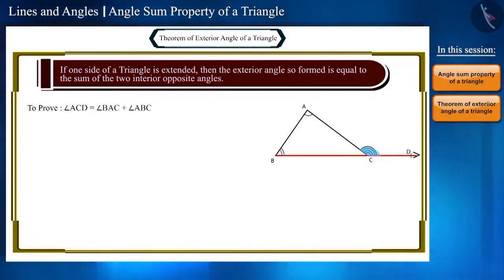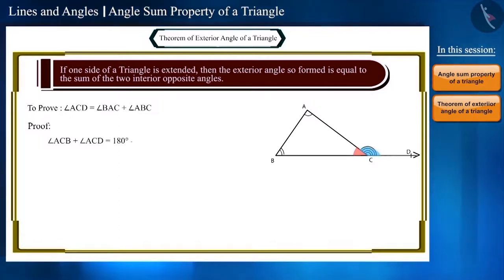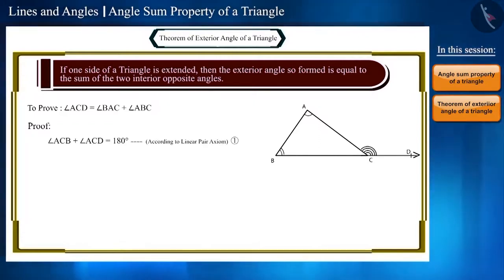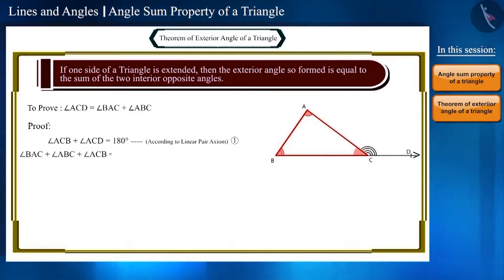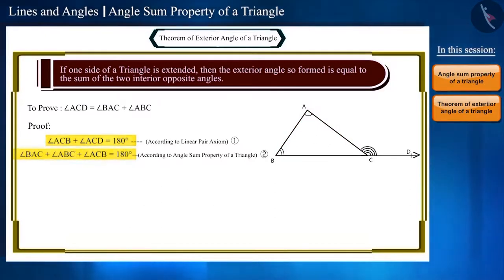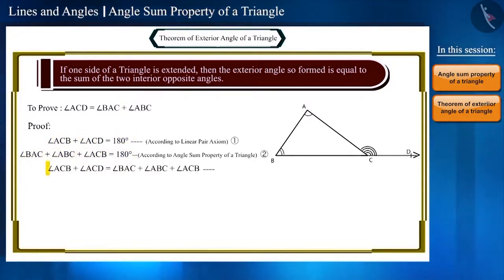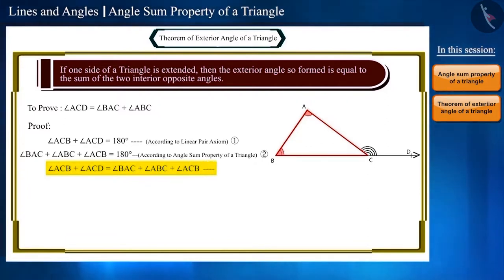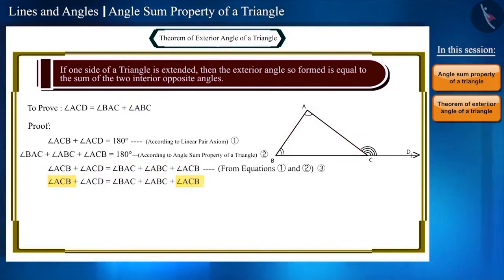This is quite straightforward. Since BCD is a straight line, angle ACB and angle ACD are a linear pair, meaning angle ACB plus angle ACD equals 180 degrees — let's call this equation two. From equation one we already know angle BAC plus angle ABC plus angle ACB equals 180 degrees. Since the right-hand sides of both equations are equal, the left-hand sides are also equal. So we can write: angle ACB plus angle ACD equals angle BAC plus angle ABC plus angle ACB — equation three.